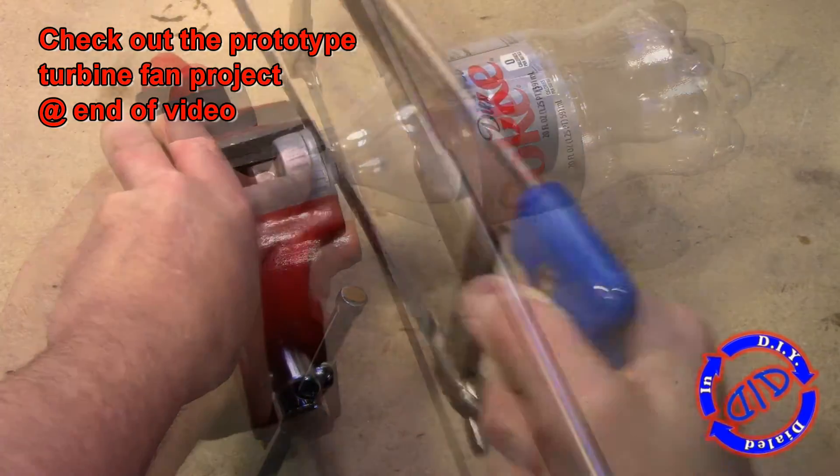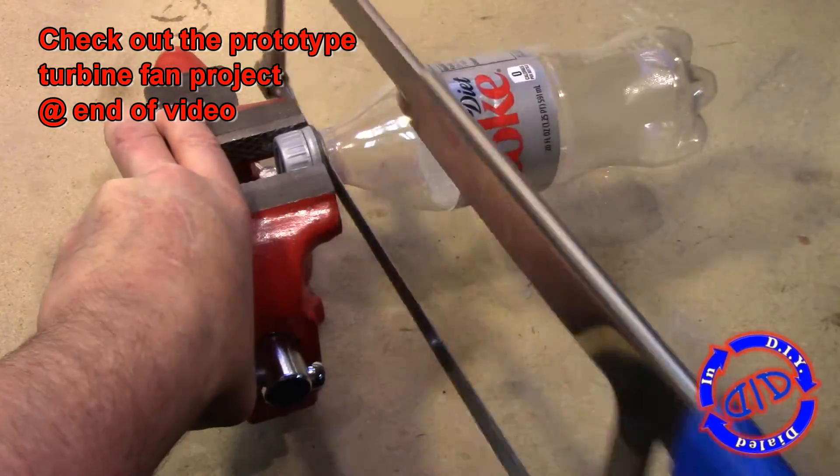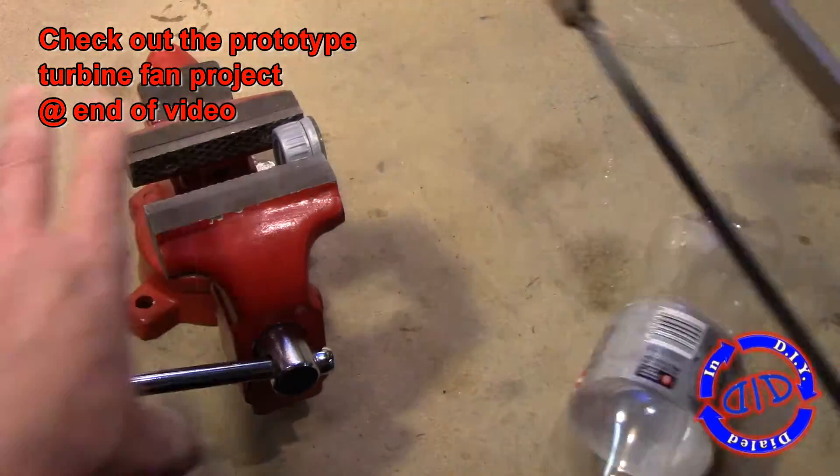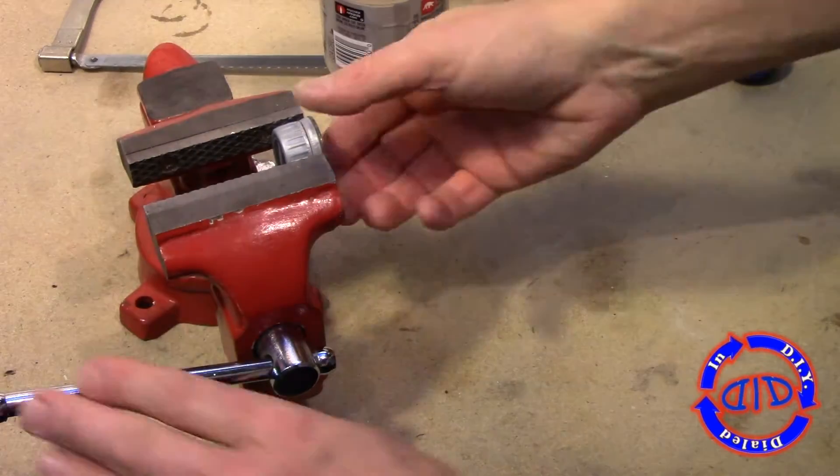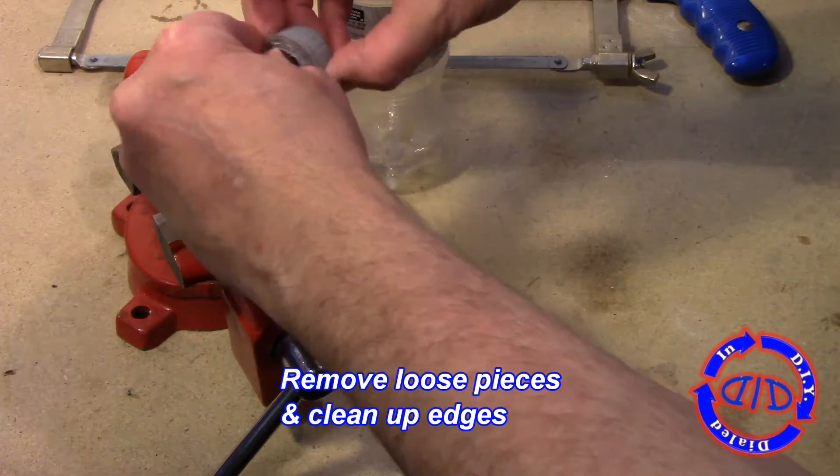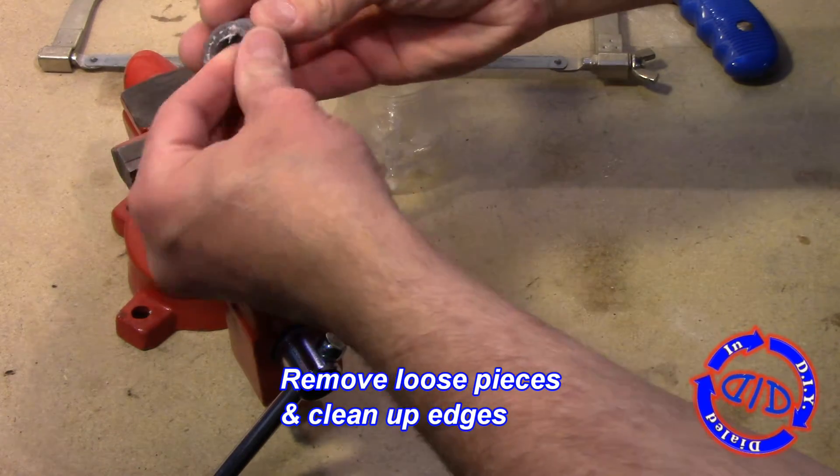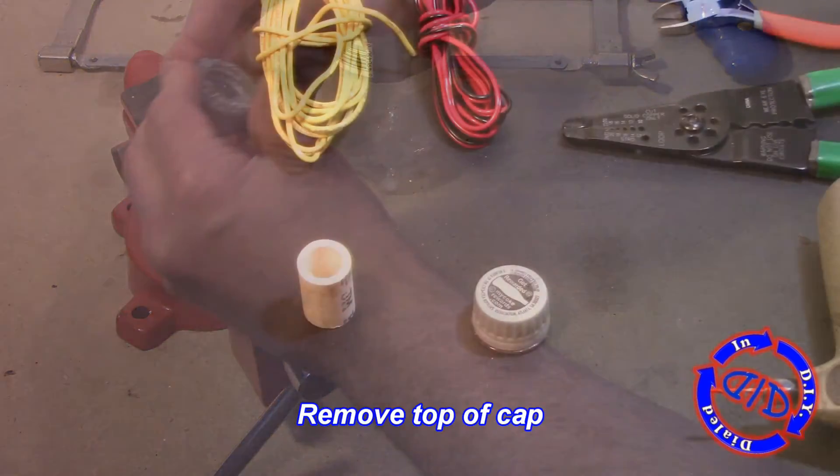I simply clamped it lightly into my vise and grabbed a hacksaw and started cutting right down that inside edge. There's a perfect rim that makes it easy to cut along and gives you this nice clean finished look that you end up with, which is perfect for making the switch that we want.